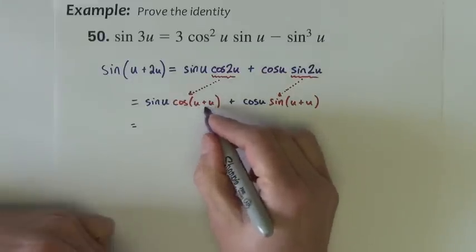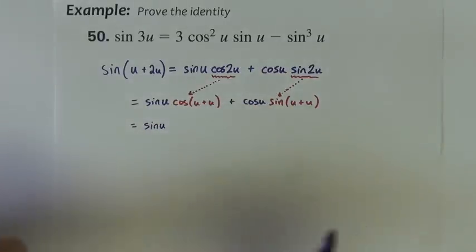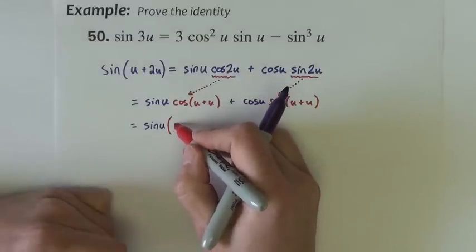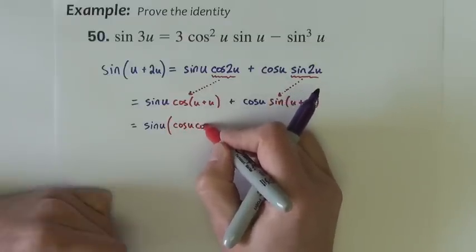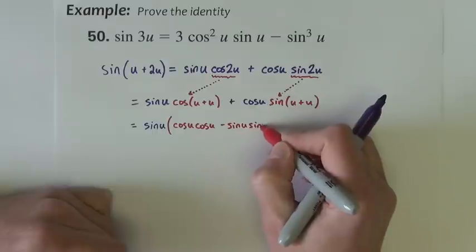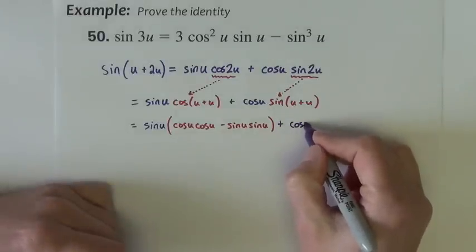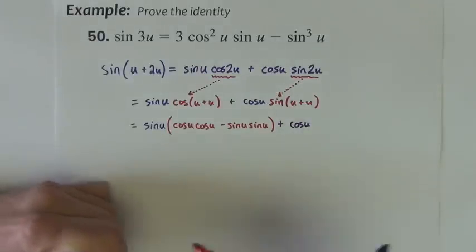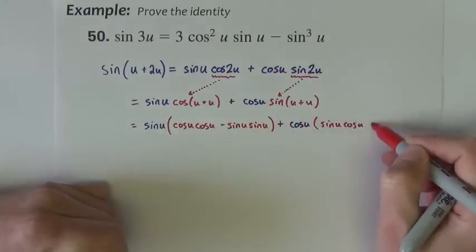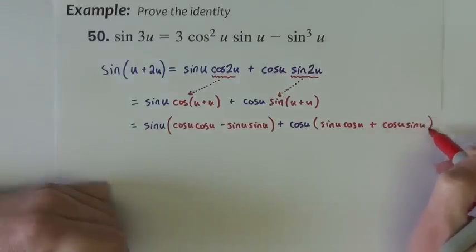Alright, continuing with expansion of these sums, I've got sine u times cosine u plus u could be cosine u, cosine u, cosine u, minus sine u, sine u, plus cosine u, cosine u, cosine u.